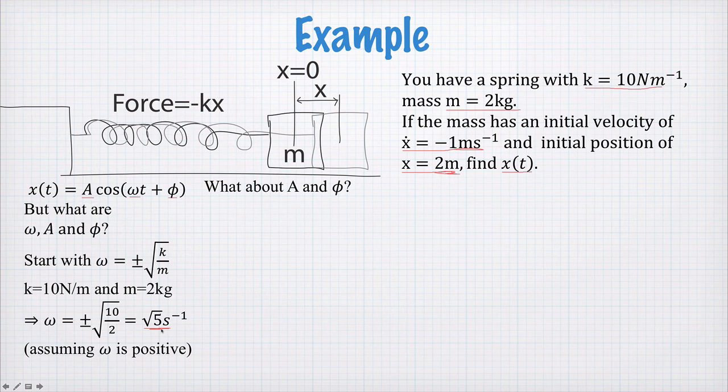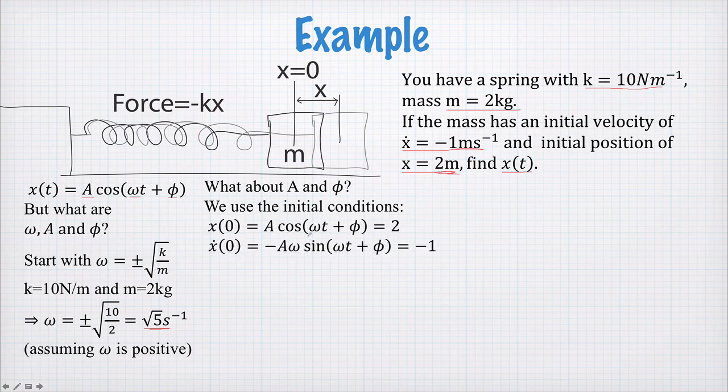Onwards to A and φ. How do we find these? Well we use the initial conditions. So we write down equations like this and like this. This first equation here is for the position. So x at time equal to zero is A cos(ωt + φ). And in a moment we'll set time here equal to zero. Our equation for velocity, x dot of zero, is given by this. So the ω at the front here comes from the derivative. And the sine comes from the derivative of the cos. And our initial velocity is negative 1. Now we set these times here equal to zero. Time here is zero. Time here is zero.